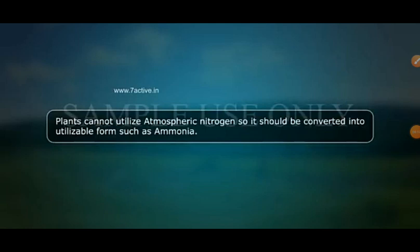Nitrogen fixation is important because plants cannot utilize atmospheric nitrogen directly, so it must be converted into a usable form such as ammonia. Usable forms of nitrogen include ammonia, enzymes, and amino acids. The nitrogen fixation process is carried out in two ways: first is atmospheric nitrogen fixation, and second is biological nitrogen fixation.